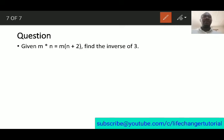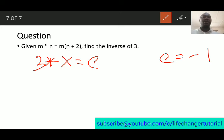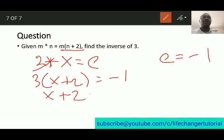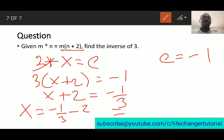Now find the inverse of 3 for the operation m star n equals mn plus 2, where we calculated the identity is minus 1. Let x be the inverse of 3, so 3 star x equals identity (minus 1). Substituting: 3 times (x plus 2) equals minus 1, so x plus 2 equals minus 1 over 3, meaning x equals minus 1 over 3 minus 2, which gives minus 7 over 3. The inverse of 3 is minus 7 over 3. I hope you understand — if you have any questions, let me know. Have a nice day.